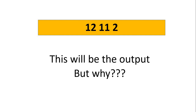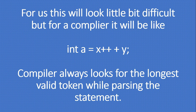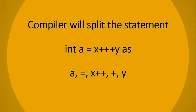For such friends, this will look a little bit difficult, but for the compiler it will look like: int a = x++ + y. The compiler always looks for the longest valid token while parsing the statement. So the compiler splits the statement 'int a = x+++y' as 'a = x++ + y'. Now it looks simple, and you can answer — that's how we get the output 12, 11, 3.